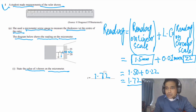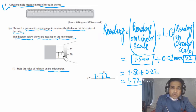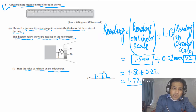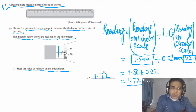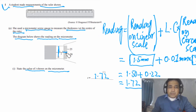When we close the micrometer, sometimes they can ask you to check for zero error. If there is no zero error, when we close the micrometer, the line has to be aligned and the zero on the circular scale has to be in front of the reference line, meaning there is no zero error.